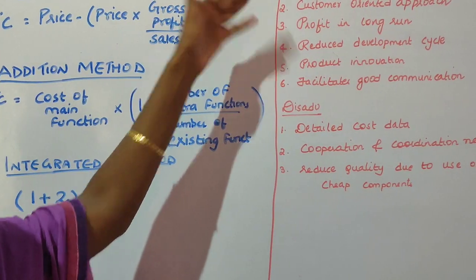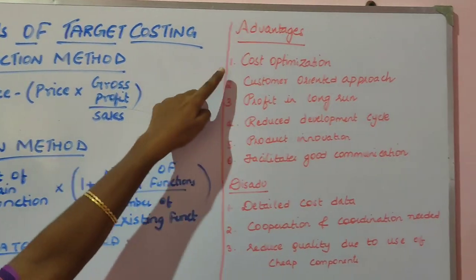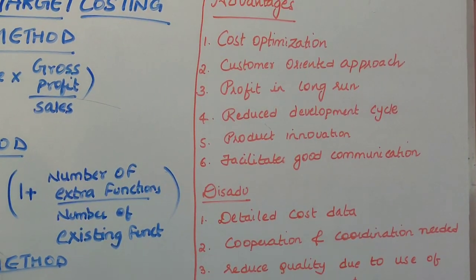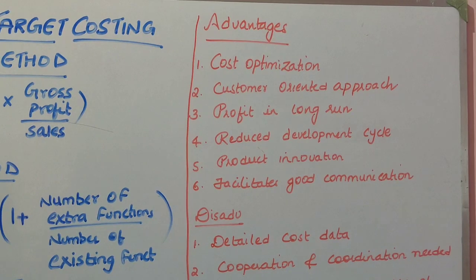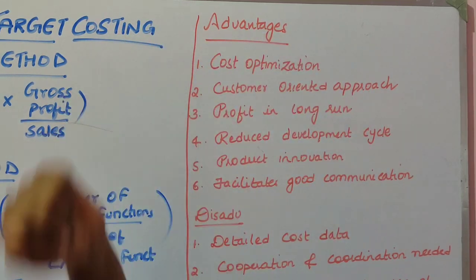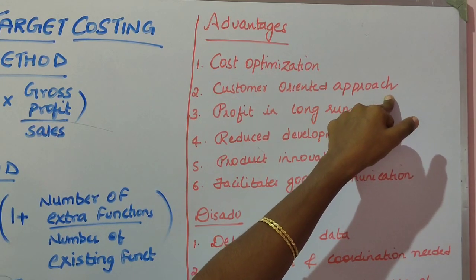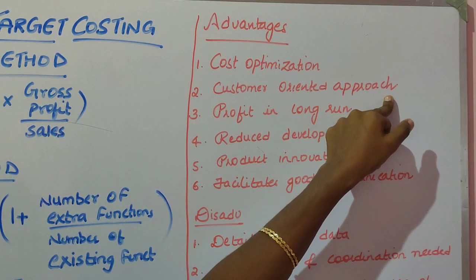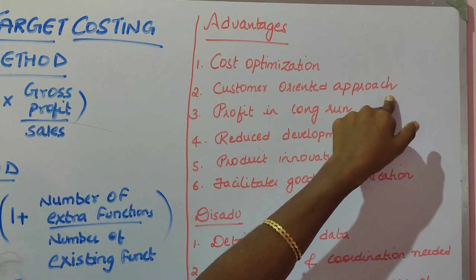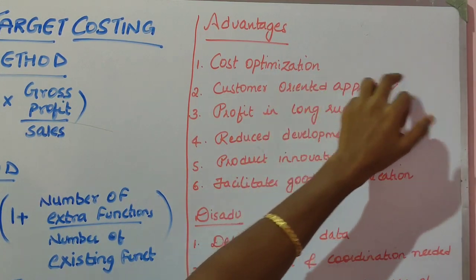Coming to the advantages of target costing. The first is cost optimization: since the target cost is set first and then the product is manufactured, cost optimization can be achieved — that is, cost can be reduced. The second advantage is a customer-oriented approach: in target costing, the customer's ability to pay is considered and the product is manufactured based on the customer's price, making it a customer-oriented approach.